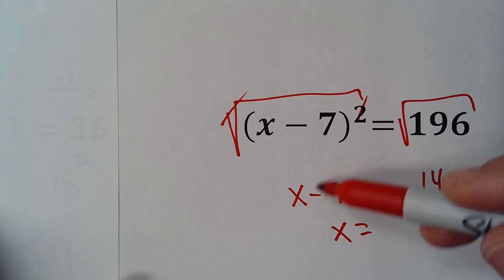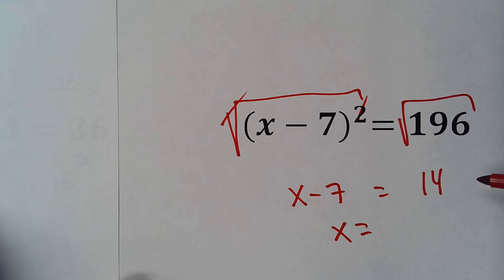So that means x equals, this will be plus 7, so that will be 21.